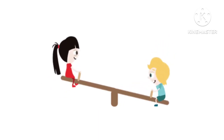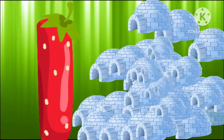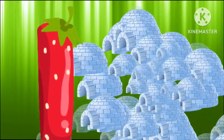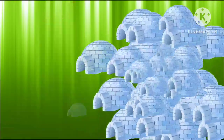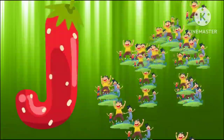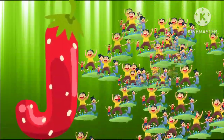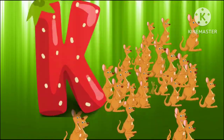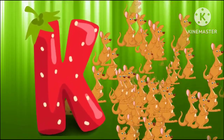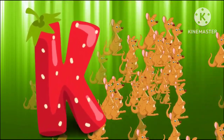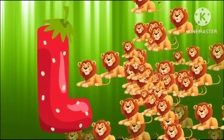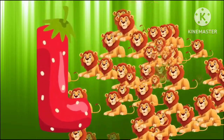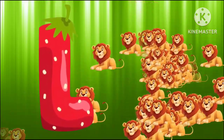I is for igloo, i-i-igloo. J is for jump, j-j-jump. K is for kangaroo, k-k-kangaroo. L is for lion, l-l-lion.